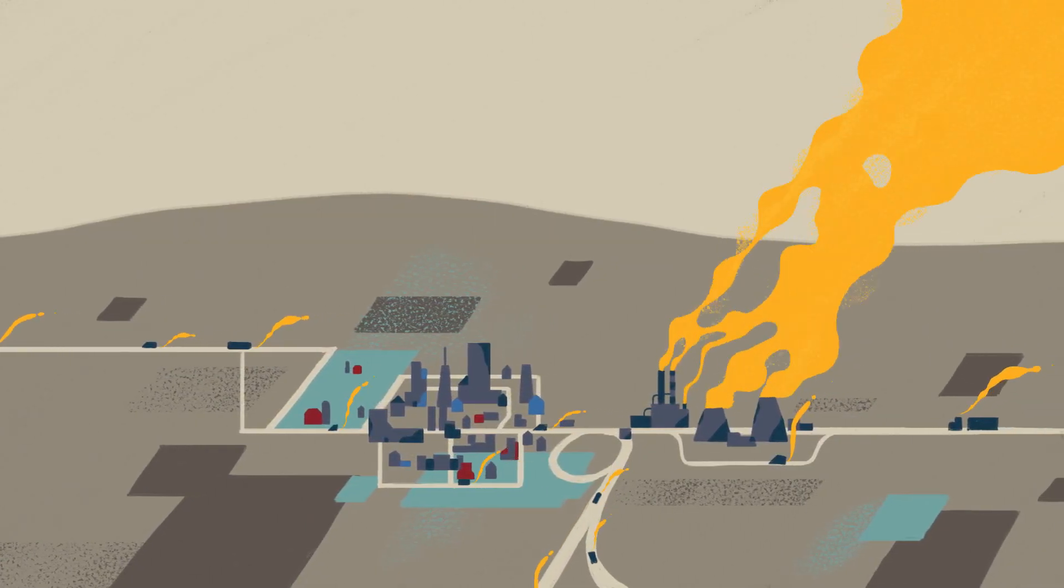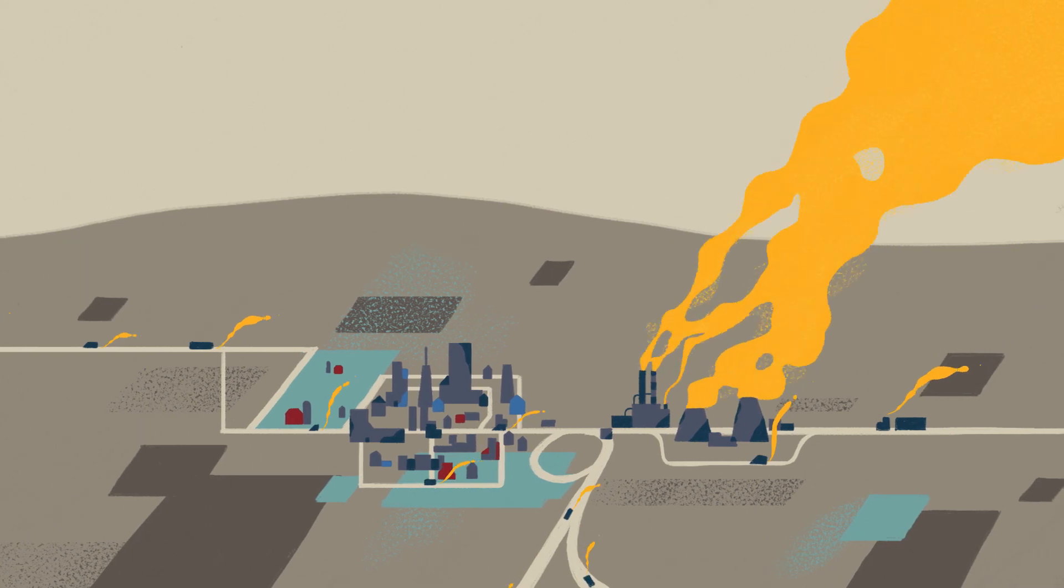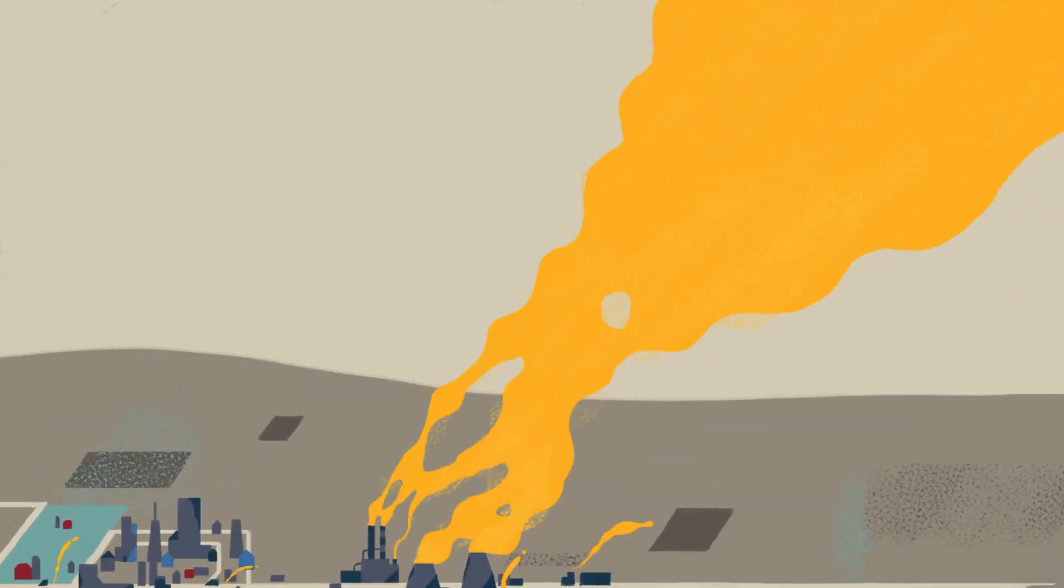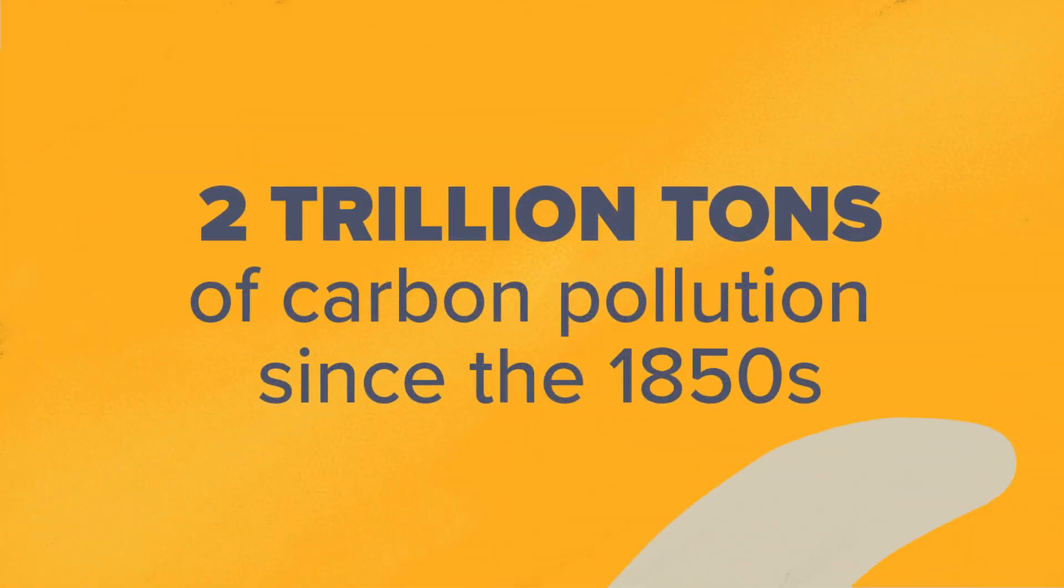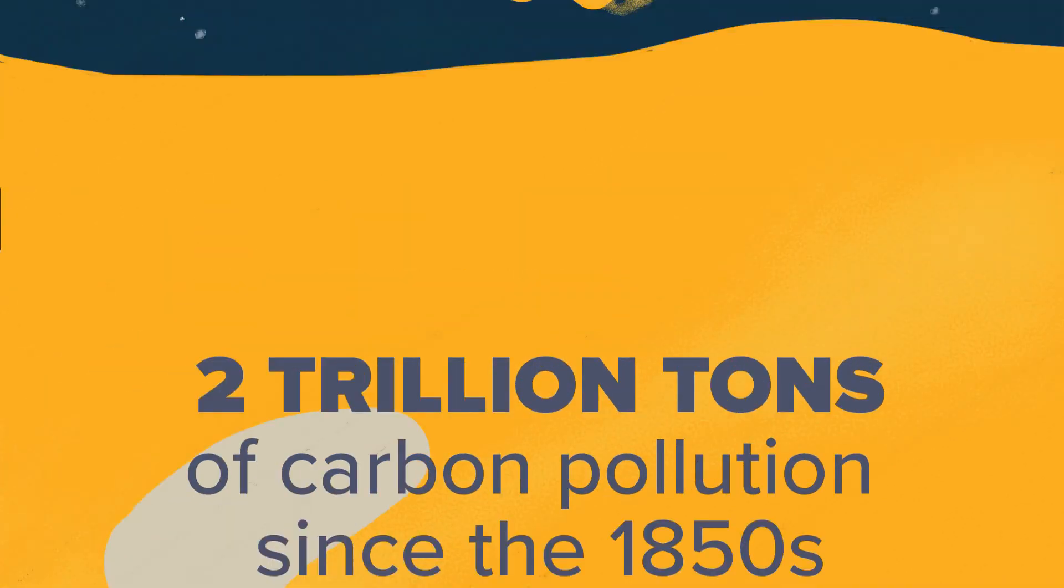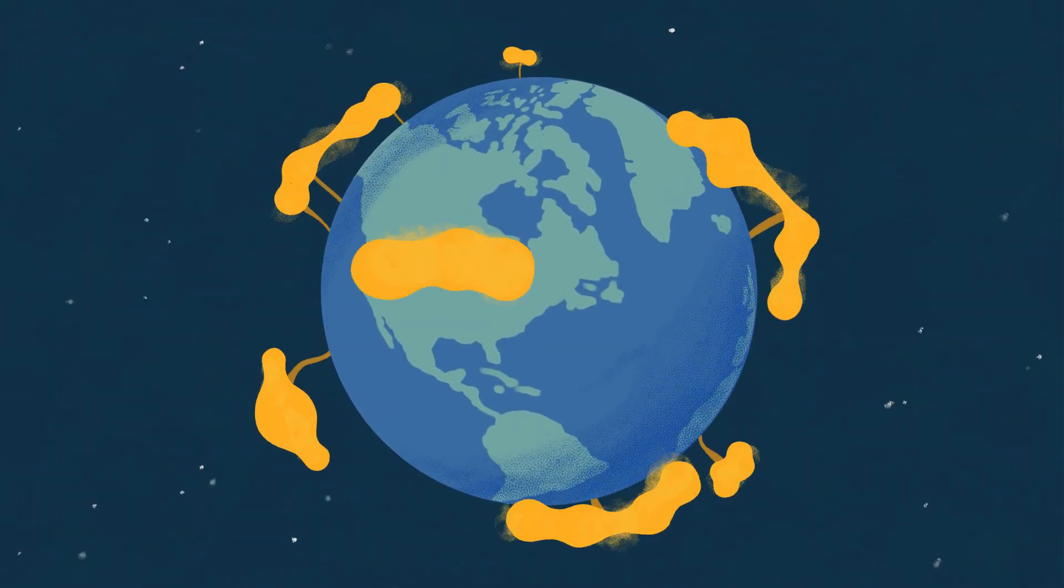Each year, we emit 40 billion tons of carbon pollution into the air and oceans. We've already created more than 2 trillion tons of carbon pollution, and once it enters the Earth's atmosphere, it stays there for hundreds of years.